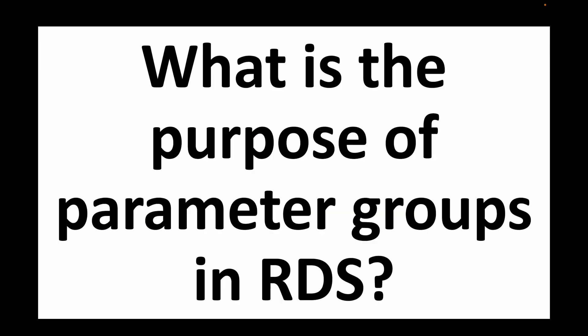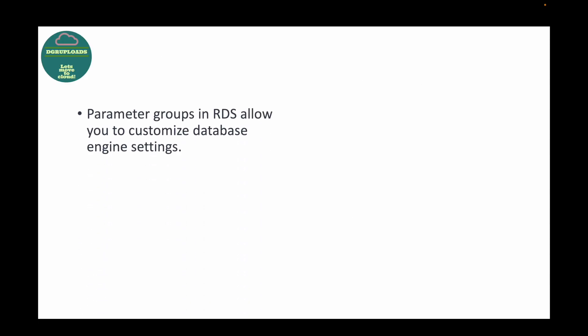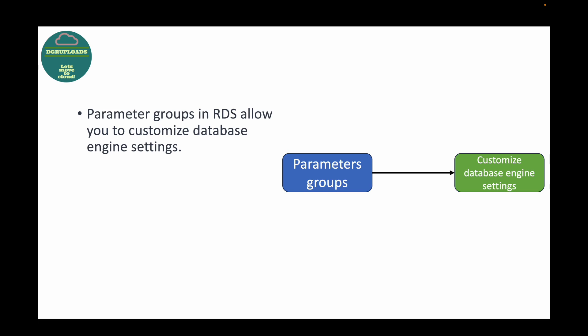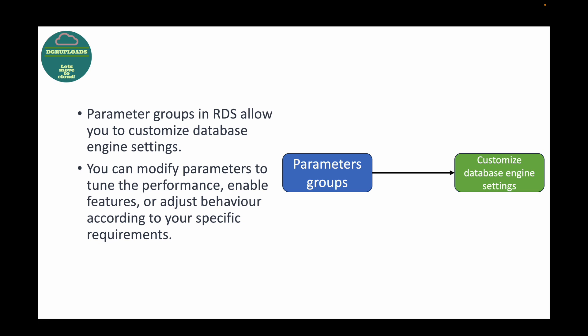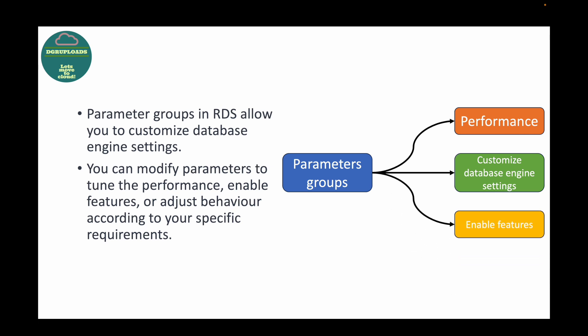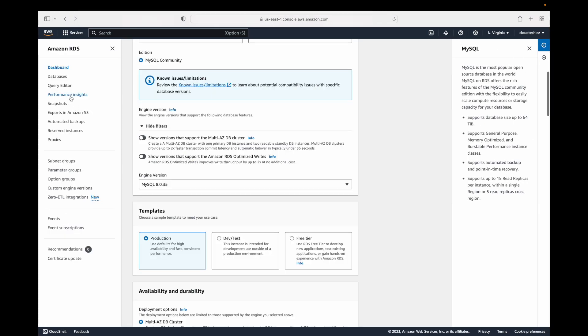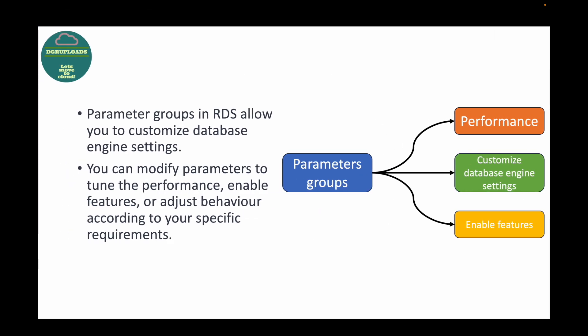The next question is: what is the purpose of parameter groups in RDS? Parameter groups are used when you want to customize your database settings. You can use these parameters to tune the performance of your database, to enable certain features, or to adjust behavior according to your specific requirements. For whichever database engine you've selected, you can define its parameters using parameter groups.